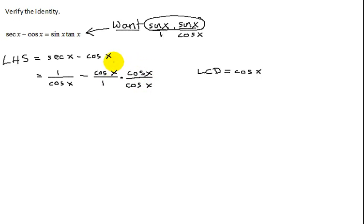So I'm going to have to multiply the numerator by cosine x. Because what you do to the numerator you do to the denominator. Because really what is cosine x over cosine x is just 1 in disguise.